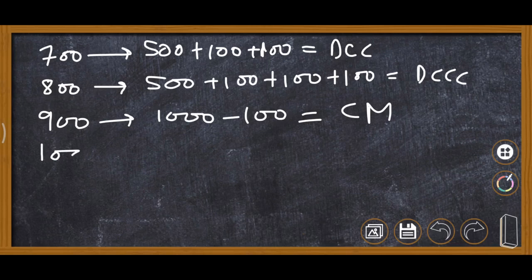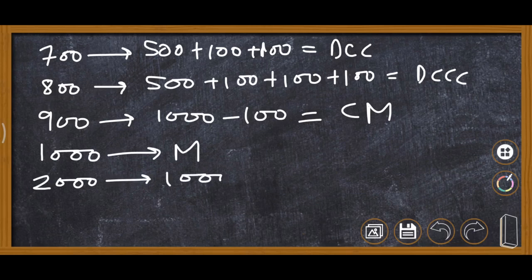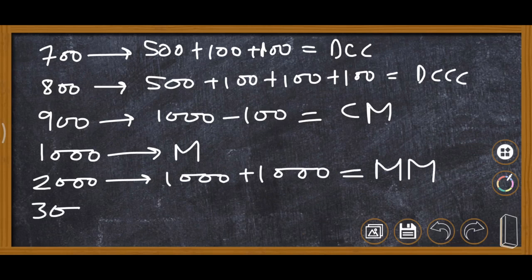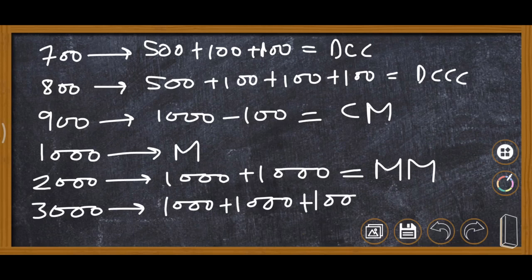1000 is written as M. 2000 is 1000 plus 1000, written as MM. 3000 is 1000 plus 1000 plus 1000, written as MMM.